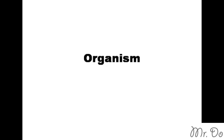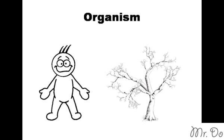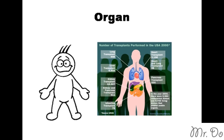A single organism, like a human and a tree, these are both individual organisms. Inside the organism, like inside our body, are a bunch of organs, like hearts and brain and kidney. Those are our organs.